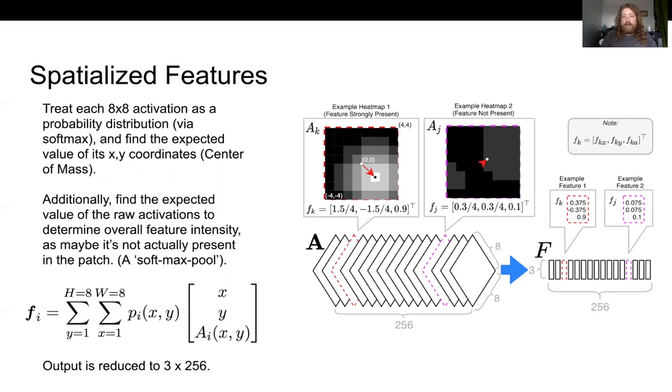You can see here we're taking this activation volume in and the two cutouts are pretend versions of what you might see inside one of these activations. One of the eight by eight patches from this volume shows a feature that's strongly localized by the convolutional neural network and it has a location we can point to. We can use integral regression to convert this eight by eight raw activation into a probability distribution via softmax and find the expected value of its activation. We do this for each of the 256 eight by eight activations and concatenate all these locations into a big feature vector.